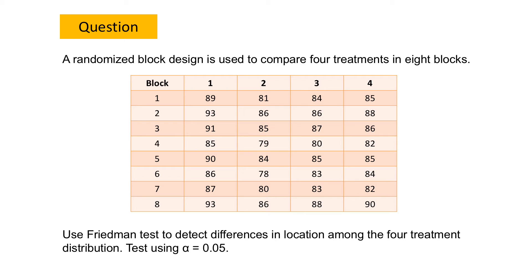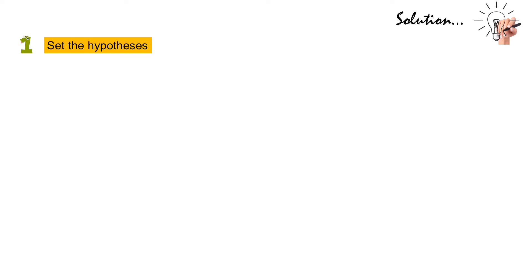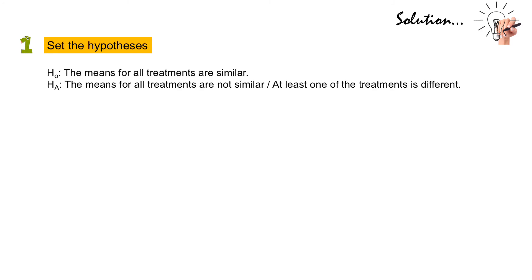Normally all problems will have a primary focus, which is to compare the treatments over the blocks, so we can easily identify what the treatment is based on the focus of the problem. In order to solve this using Friedman test, we perform all the steps discussed. The first step is to set the hypothesis. The null hypothesis states that the means for all treatments are similar, and the alternative hypothesis states that the means for all treatments are not similar, or at least one of the treatments is different.